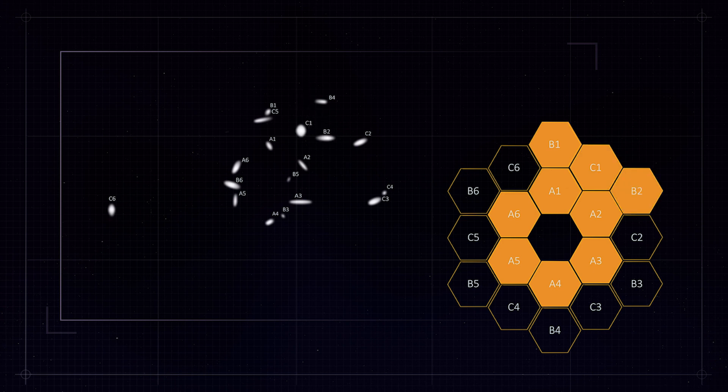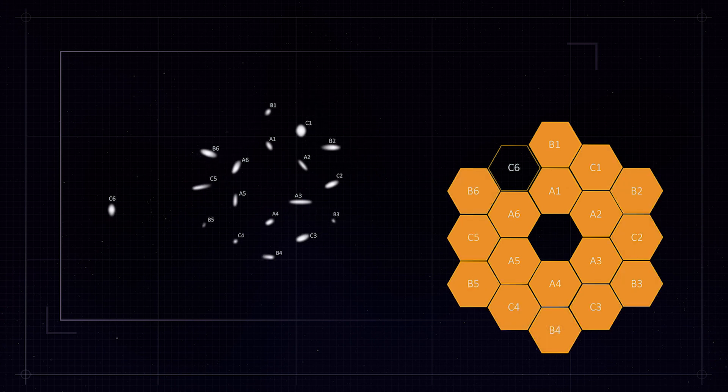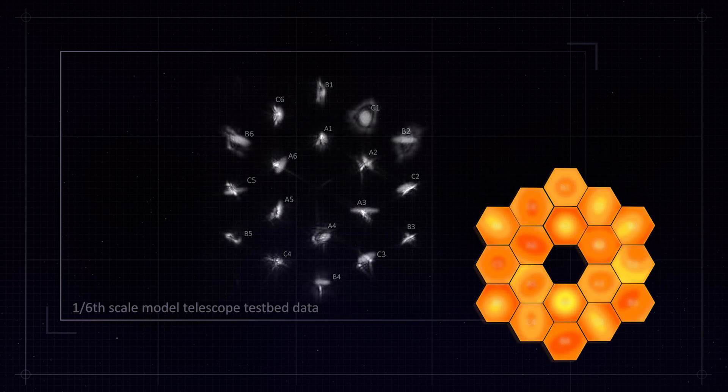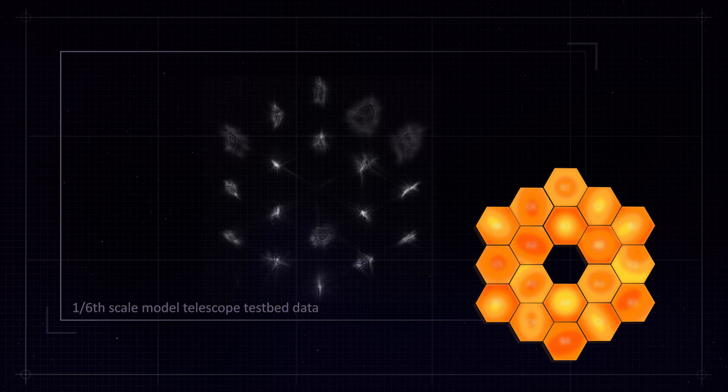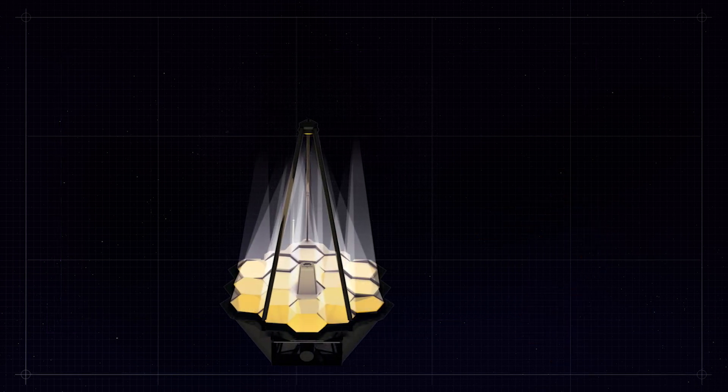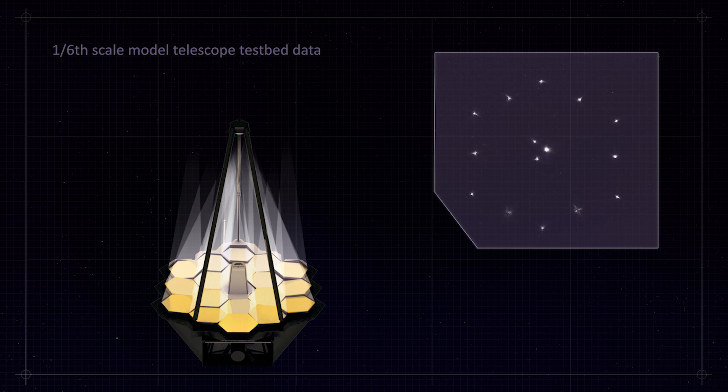The next step is to make an array of them, and then we're ready to start what we call global alignment, which is when each of those 18 spots will start to be aligned and focused. That's the last step before we take those 18 spots and put them on top of each other to start forming a single star. That's the work that will be starting soon.